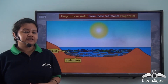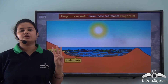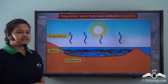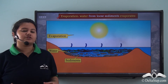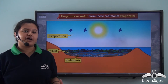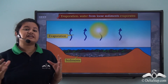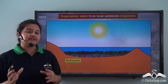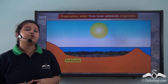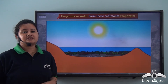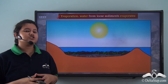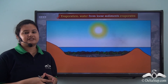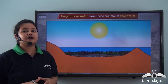Lithification involves three major processes. The first process is evaporation. Sometimes water from the loose sediments evaporates, and due to this the intermolecular spaces between the sediments get reduced. Thus the sediments become more compact. Evaporation is the process in which water from loose sediments evaporates and the sediments become more compact.